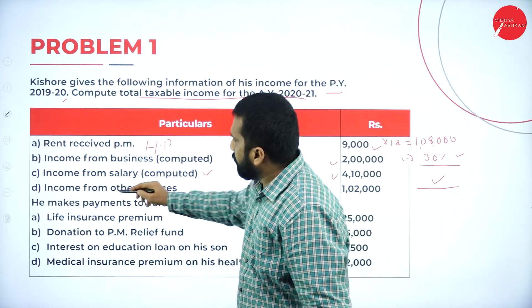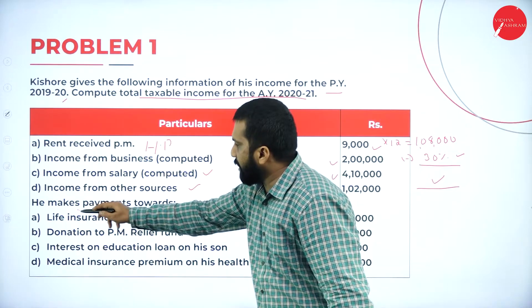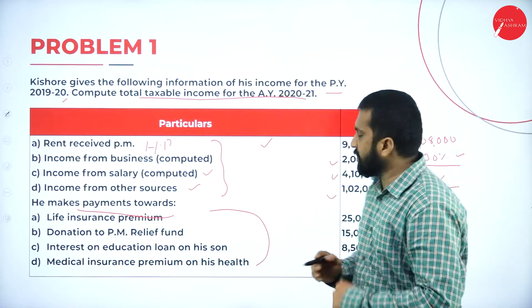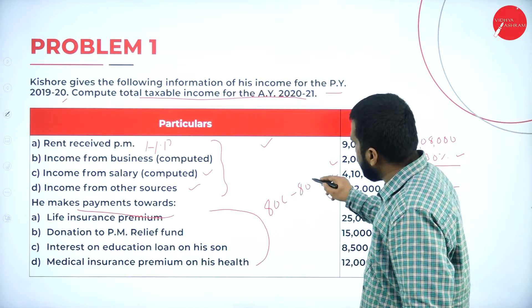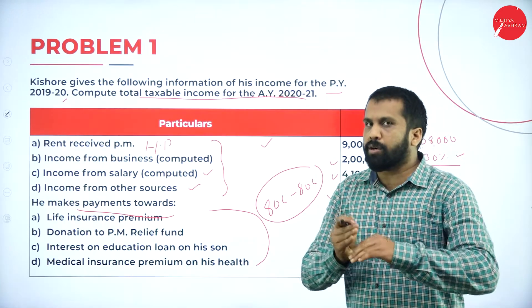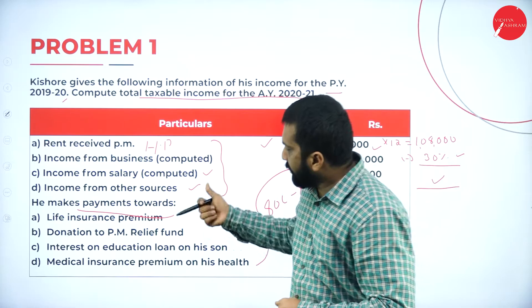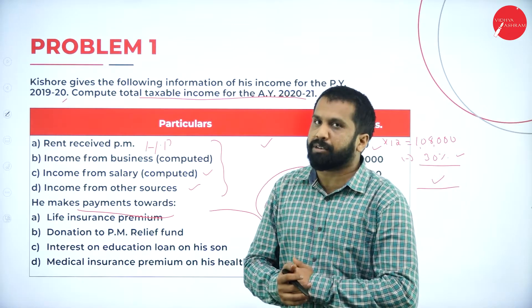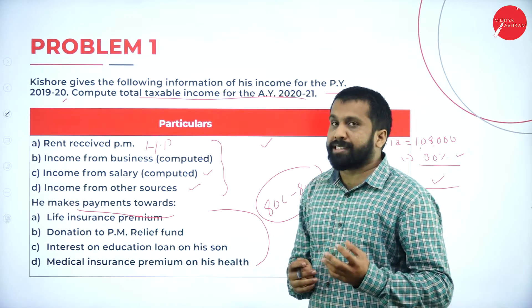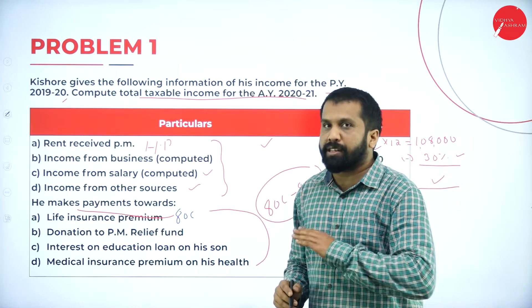These payments relate to deductions under sections 80C to 80U. Life insurance premium and any investment comes under 80C, with a limit up to 1 lakh 50,000 — no tax up to that limit.